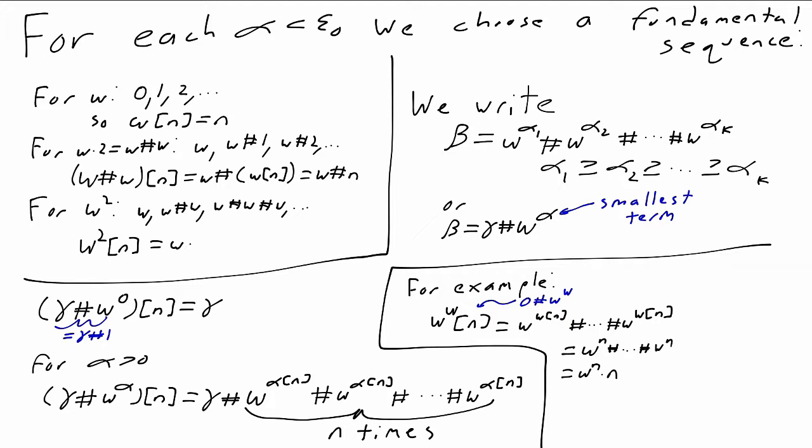You might have expected that omega to the omega bracket n was going to be omega to the n rather than omega to the n times n. It mostly doesn't matter. There are lots of valid choices of fundamental sequences, and they're basically equivalent. This choice turns out to work well for us because it's going to line up nicely with the construction of the Goodstein sequence.